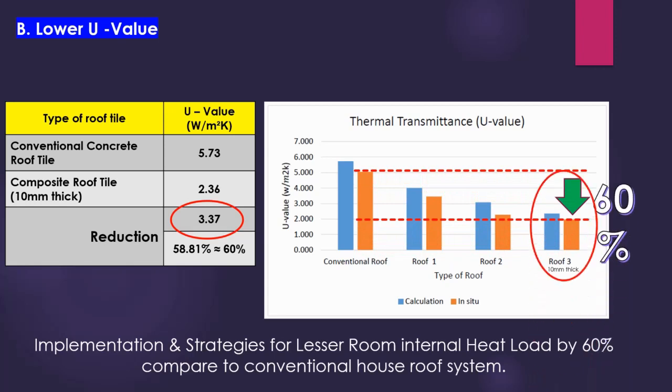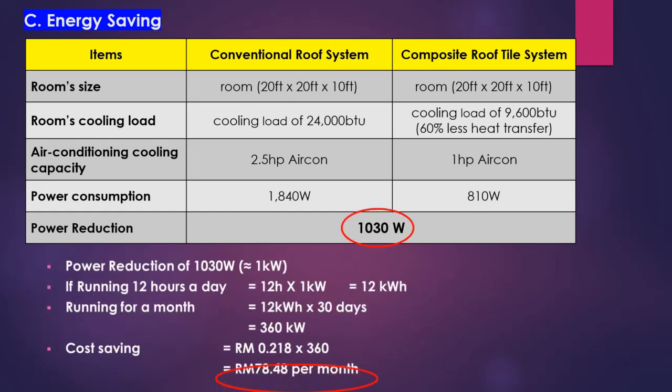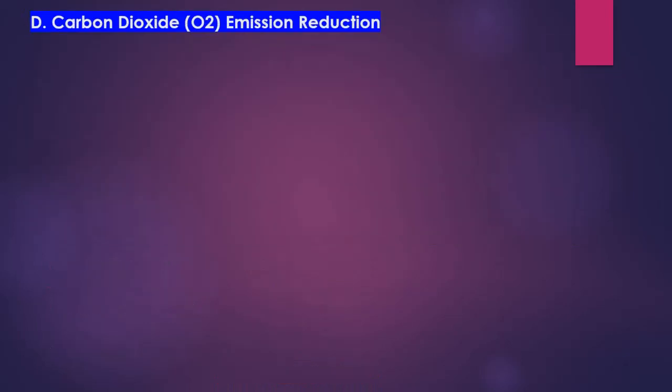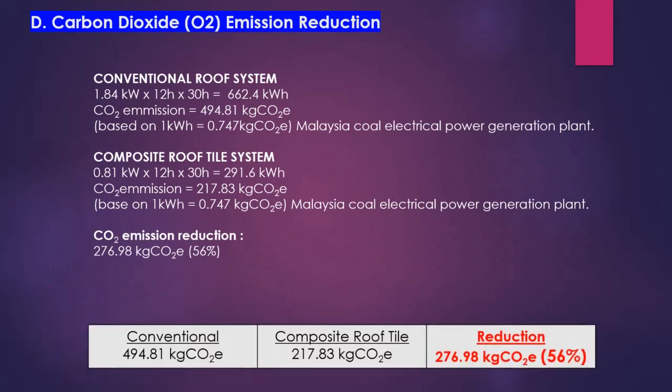The 60 percent heat load reduction results in an air conditioning power consumption reduction of up to 1030 watts, which may result in cost savings of up to 78.48 ringgit per month. The carbon dioxide emission reduction, comparing conventional to composite roof tile, is around 276.98 kilograms of CO₂ equivalent, or 56 percent.